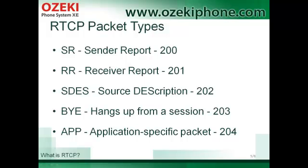Source Description is used to provide information about the name, email address, telephone number, and address. BYE packets indicate that the participant ends the conversation. And finally, the APP packet can provide specific information about the application.